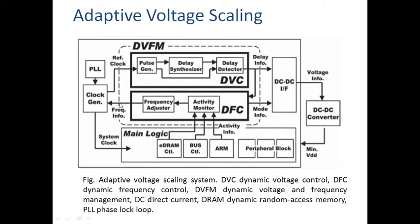The frequency adjuster gives a particular frequency to the circuit — to a critical path or non-critical path. In adaptive voltage scaling, we have two on-chip blocks: dynamic voltage scaling and dynamic frequency scaling. Dynamic voltage scaling calculates the delay in the critical path, and according to that delay, it sends a signal to the DC-to-DC converter.